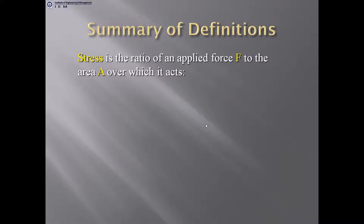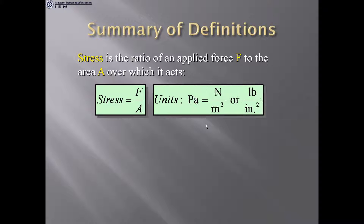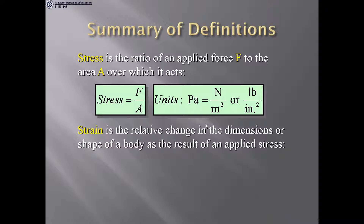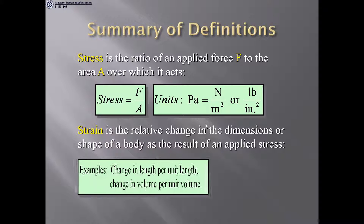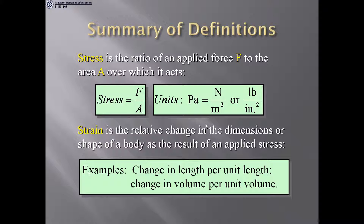Summary of definitions: stress is the ratio of an applied force F to the area over which it acts, so stress = F/A. Its units are Pascal, Newton per meter squared, or pound per inch squared. Strain is the relative change in dimensions of a body as a result of an applied stress — for example, change in length per unit length, or change in volume per unit volume.